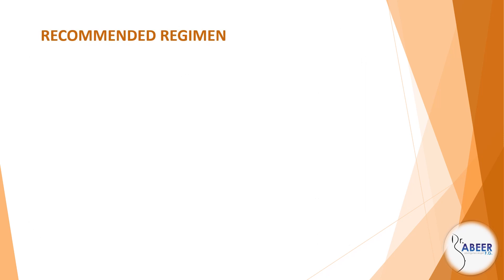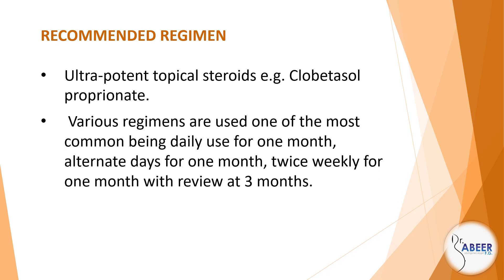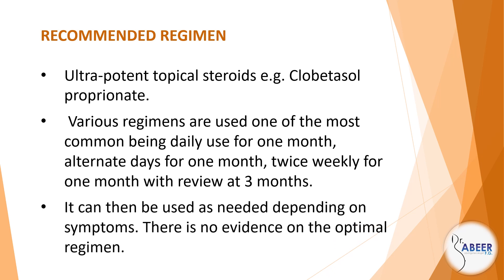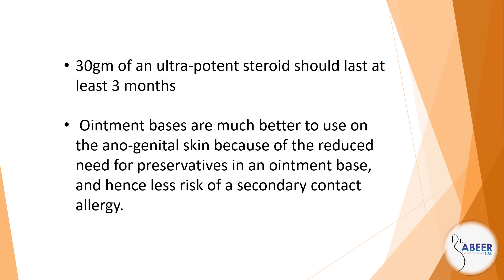Recommended regimen: ultra-potent topical steroids, for example clobetasol propionate. Various regimens are used; one of the most common being daily use for 1 month, alternate days for 1 month, then twice weekly for 1 month, with review at 3 months. It can then be used as needed depending on symptoms. There is no evidence on the optimal regimen. 30 grams of an ultra-potent steroid should last at least 3 months. Ointment bases are much better to use on the anogenital skin because of the reduced need for preservatives and hence less risk of secondary contact allergy.